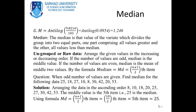Question: When odd number of values are given, find the median for: 25, 18, 27, 10, 8, 30, 42, 20, 53. Arranging in ascending order: 8, 10, 18, 20, 25, 27, 30, 42, 53. The middle value is the fifth item, which is 25. Using the formula: (9+1)/2 = 5th item = 25. This is the median — the middle value of the series.